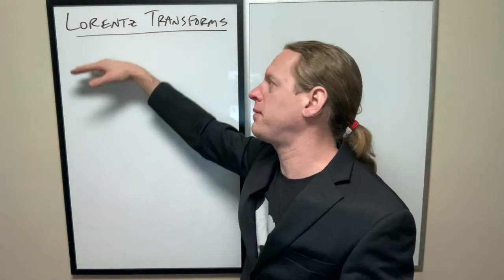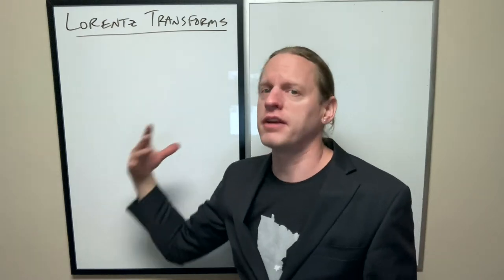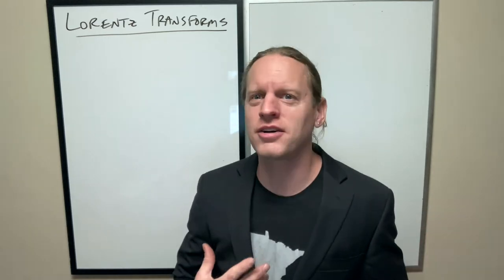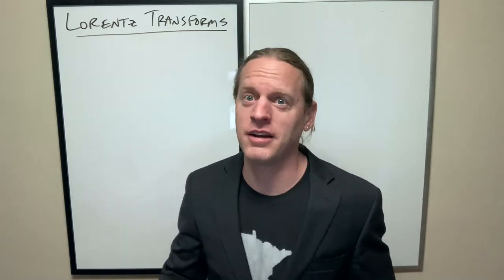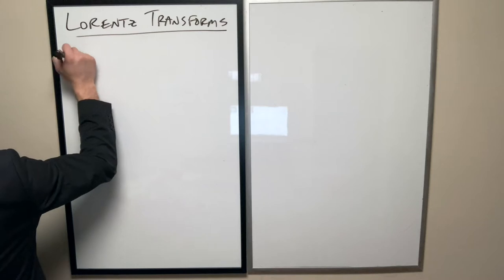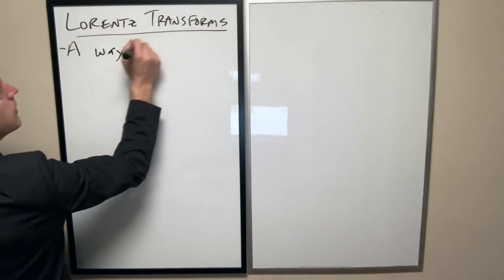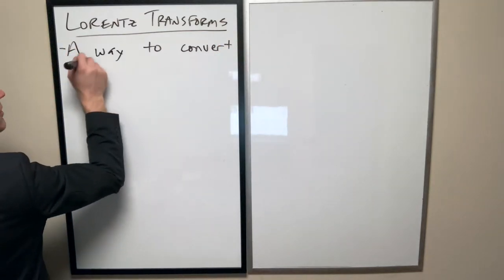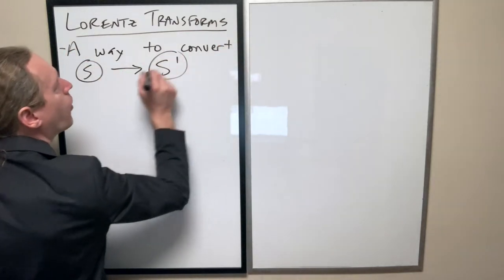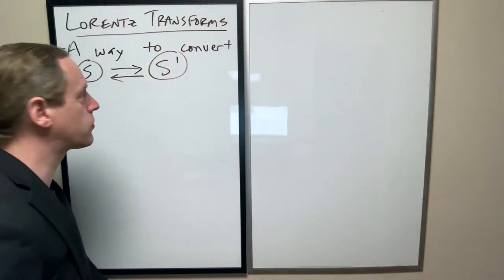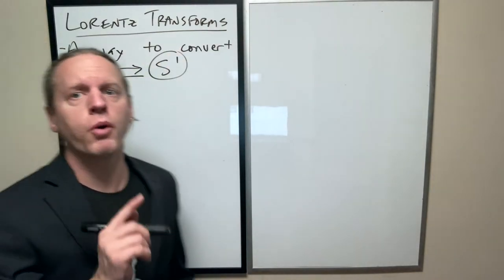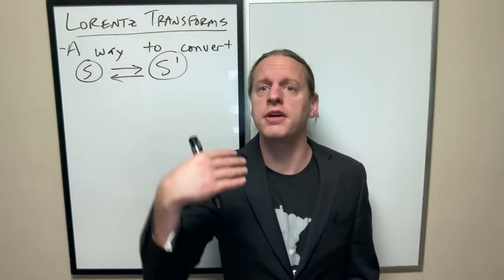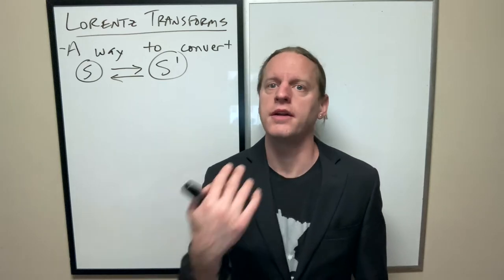So I'm strictly just going to go through the mathematical operation, or not even the derivation, but just the mathematical operation, and then we're going to talk about how that actually turns out to be crazy in the end. So again, it's a way to convert a coordinate system S into S prime, or you can do it backwards of course.